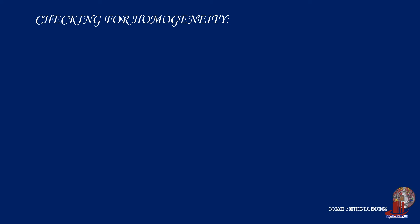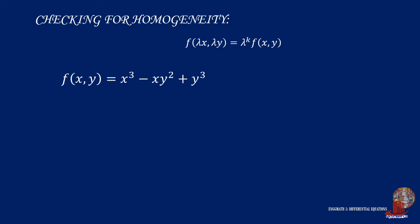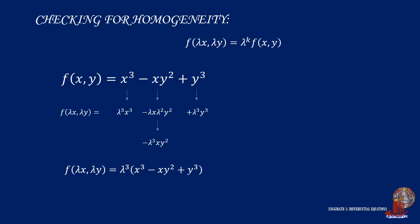In case you are not certain about visually checking the degree of terms, an effective method of checking homogeneity is by multiplying lambda, where the outcome should satisfy f(λx, λy) = λ^k · f(x, y). For the function x³ - xy² + y³, multiplying lambda gives λ³x³ - λ³xy² + λ³y³, which simplifies to λ³(x³ - xy² + y³). This matches the standard form, so the function is homogeneous with degree 3 in x and y.